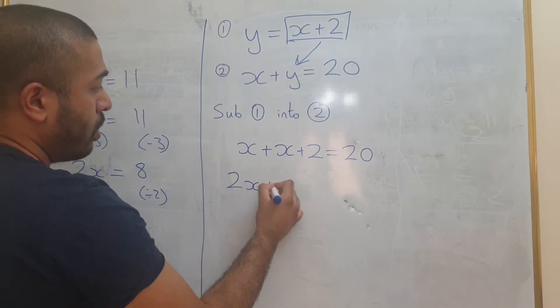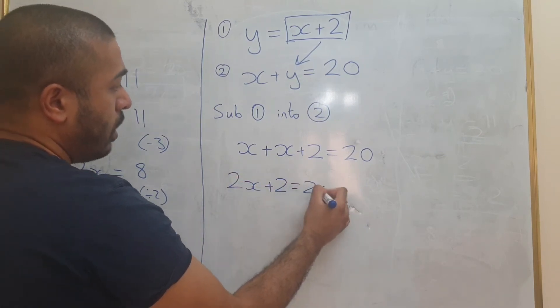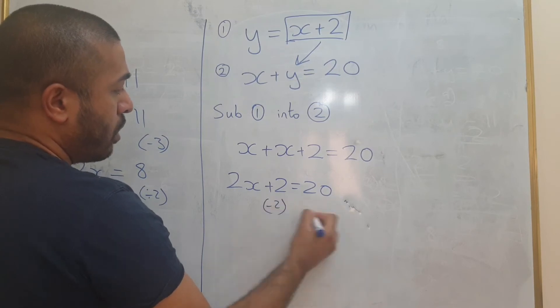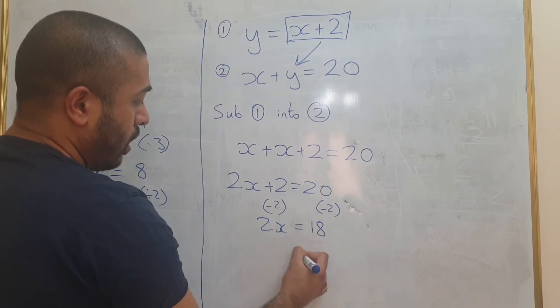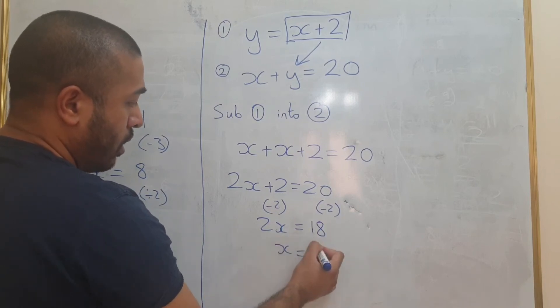That's 2x plus 2 equals 20 minus the 2 from both sides. You get 2x equals 18. And therefore, x equals 9.